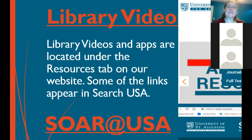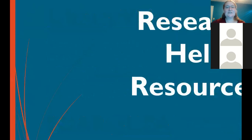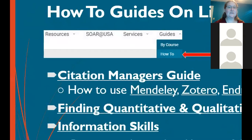On our library homepage we have how-to guides, including information about citation managers. Citation managers are downloadable through the Writing Center or IT — just let us know if you have any issues and we can find someone to help. There's also a link for finding quantitative and qualitative research, information skills — including the difference between peer-reviewed versus trade publications like magazines and newspapers — how to evaluate websites, and a guide on writing case reports.